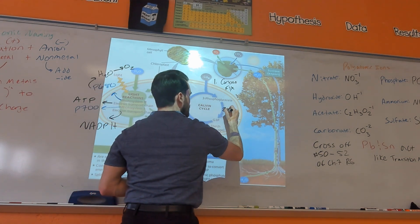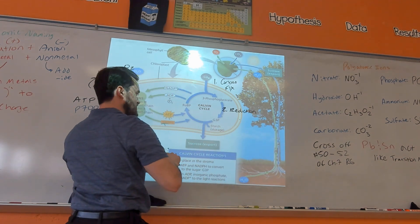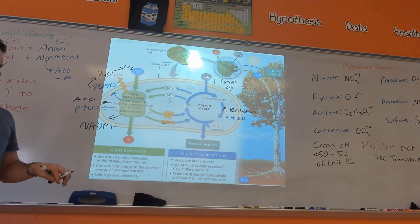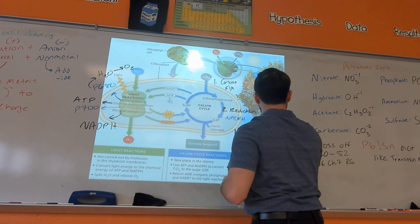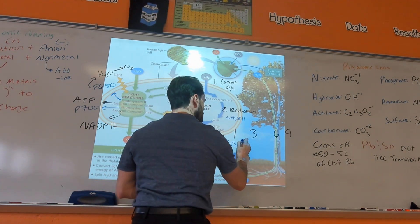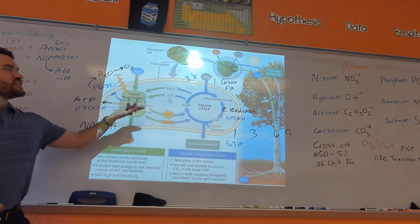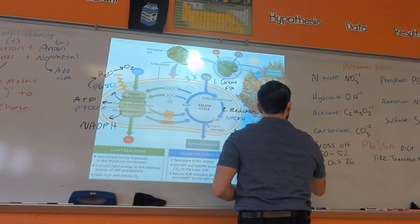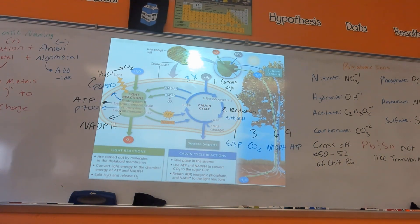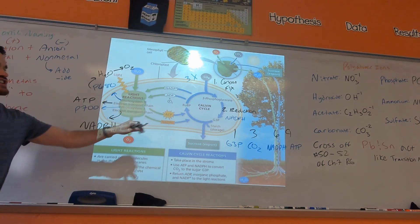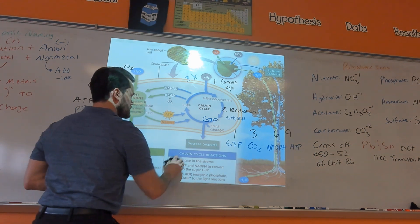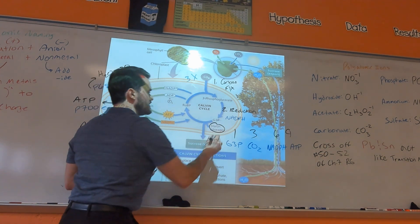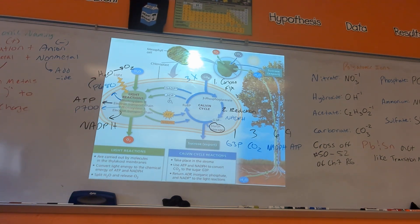Reduction in the Calvin cycle happens because we're investing that NADPH. The numbers again: one G3P is made per three turns of the cycle, using three CO2s, six NADPHs, and nine ATPs. That G3P can then be used in different ways — if the plant wants to store it, it stores it as starch; if it needs to transport G3P somewhere else in the plant, the transport form is sucrose, also known as table sugar.